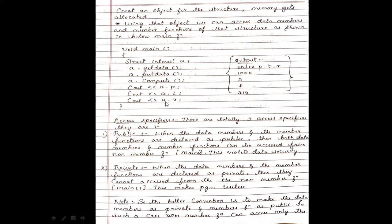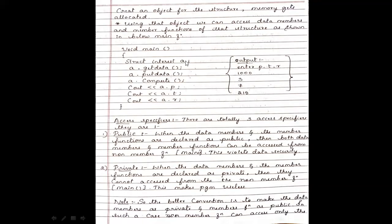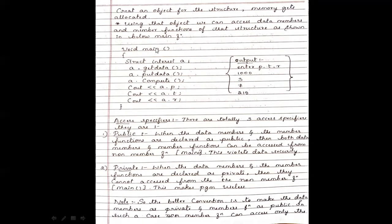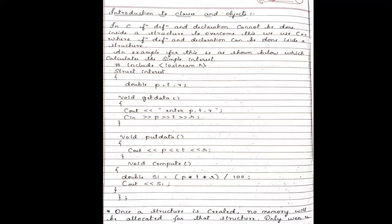This is how you create a structure, create an object for it, and access member functions and data members through that object. The variables are called data members and the functions are called member functions. In C++, when data members and member functions are grouped together, data gets encapsulated — however, there is one major problem with this approach.